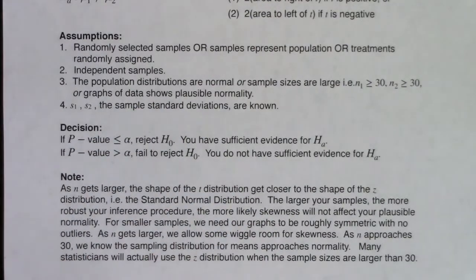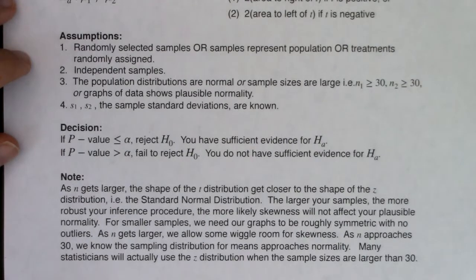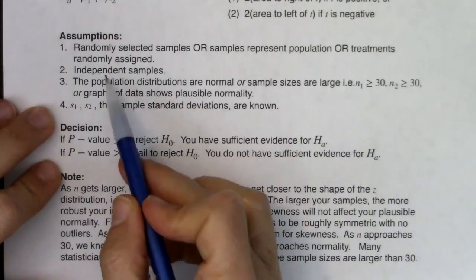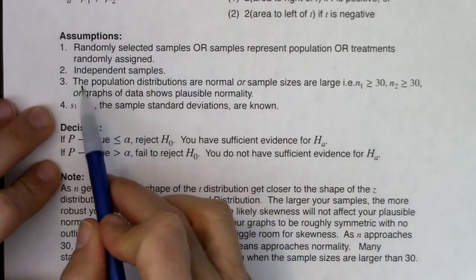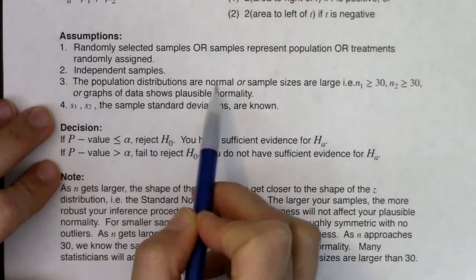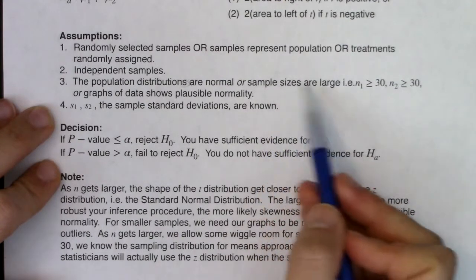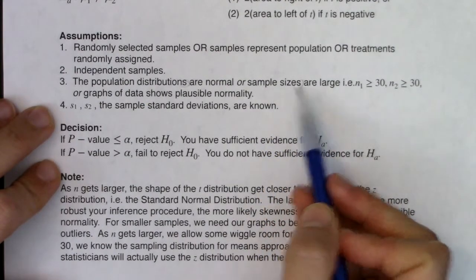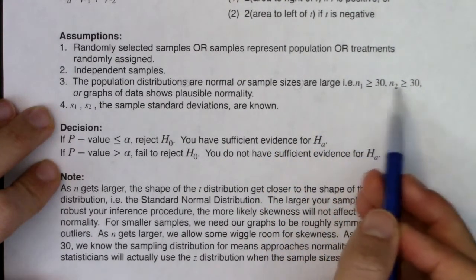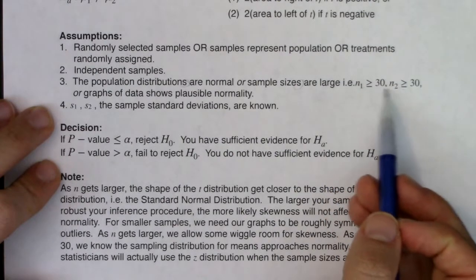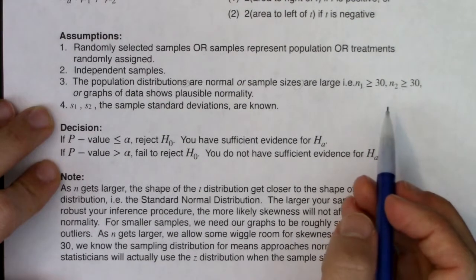Assumptions are similar to Chapter 9 but a little different. We still want randomly selected samples, or samples that represent our population, or treatments that are randomly assigned. We need to check whether we have independent or paired samples, because in mean land both options are available in Chapter 10. For normality, population distributions must be normal — and I say distributions plural, we need both — or sample sizes are both greater than or equal to 30 for the central limit theorem to kick in.